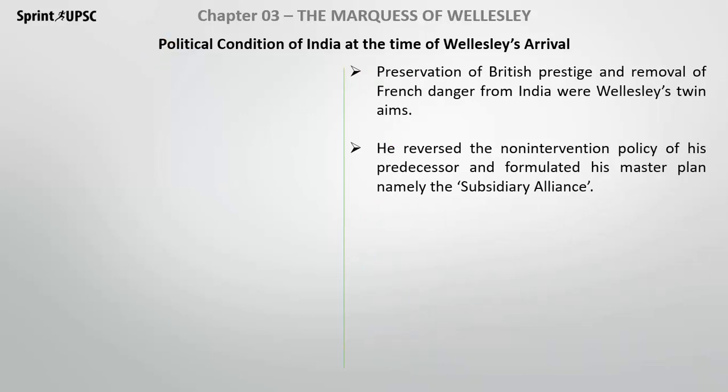The preservation of British prestige and the removal of French danger from India was the main aim of Wellesley. There were two aims: the Britishers' prestige had to be maintained, and he was very much into imperialism, expansionism, and annexation. The previous non-intervention policies that had been running had to be reversed, and his master plan to achieve this was the Subsidiary Alliance System.